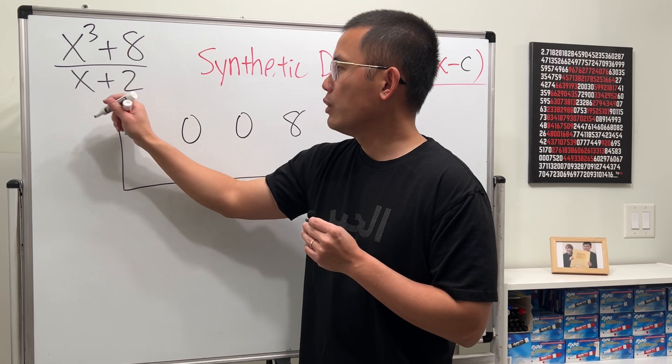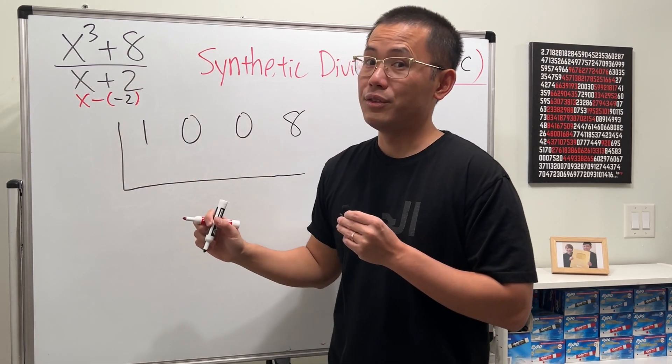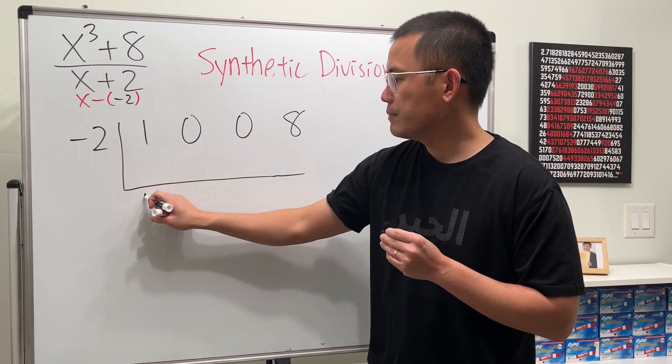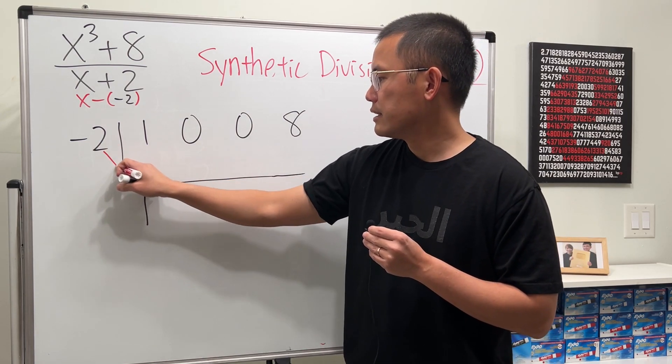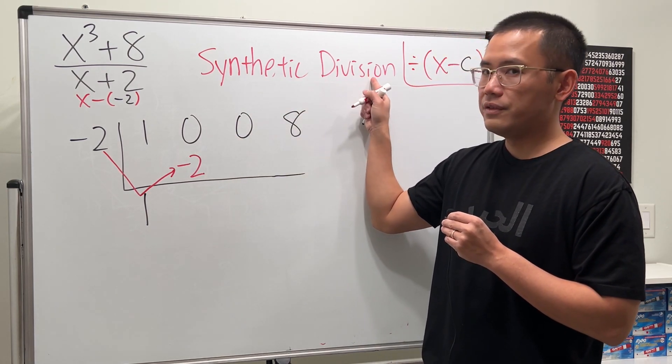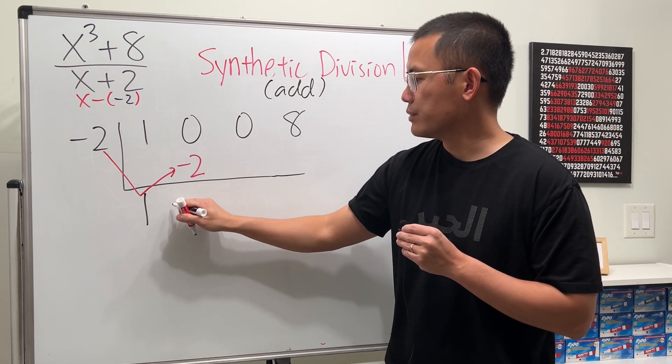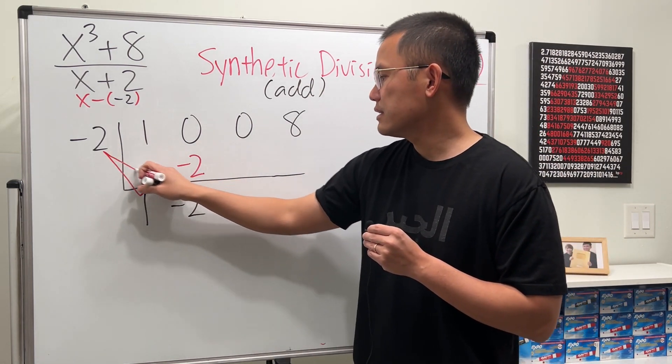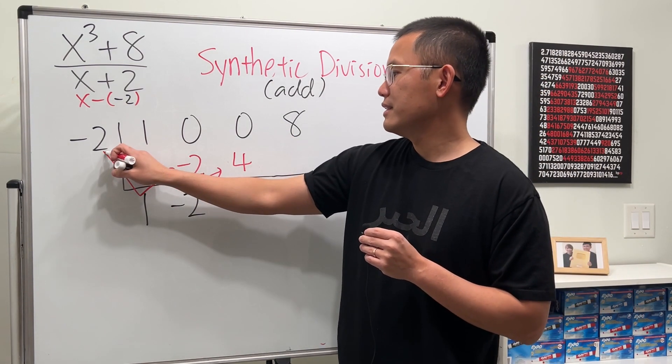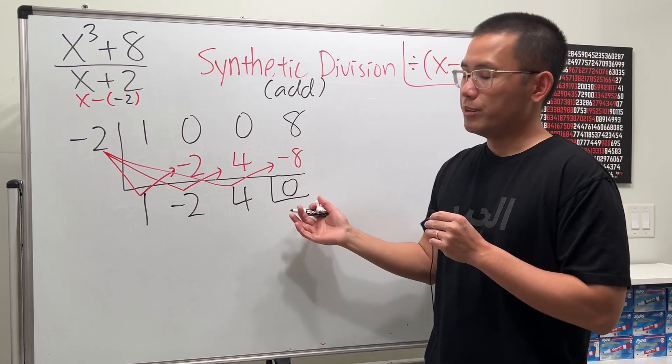Now, we have x plus 2. So it will be what? You look at this as x minus negative 2. So negative 2. You put it on the other side. Now you just do the same thing that we did earlier. Bring this down. And then you take this, times that. Negative 2 times 1 is negative 2. Put it here. And then remember, for synthetic division, we are going to add. So add them up. We get negative 2. And then do the same thing. Take this, times that. Get positive 4. And then we add them. And then take this, times that, which is negative 8. Add them. We get 0. The remainder here is 0.